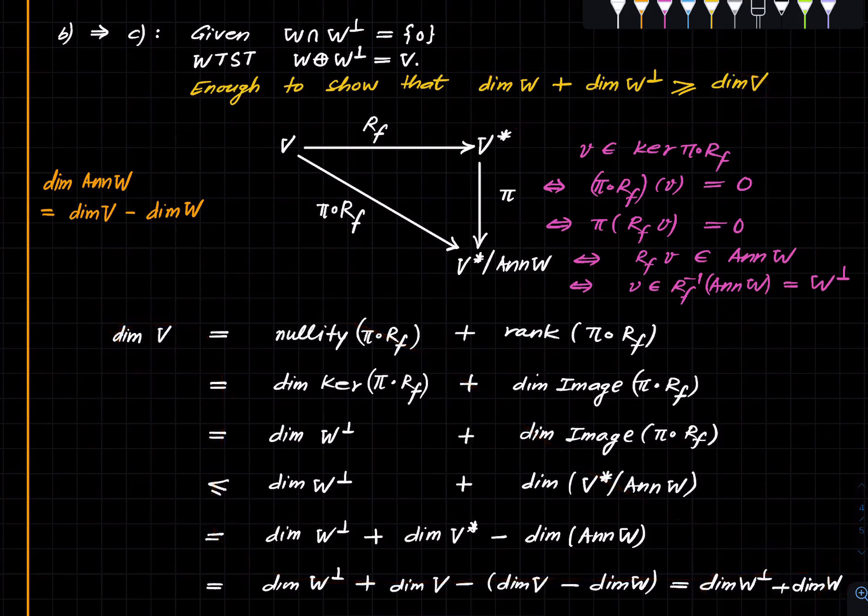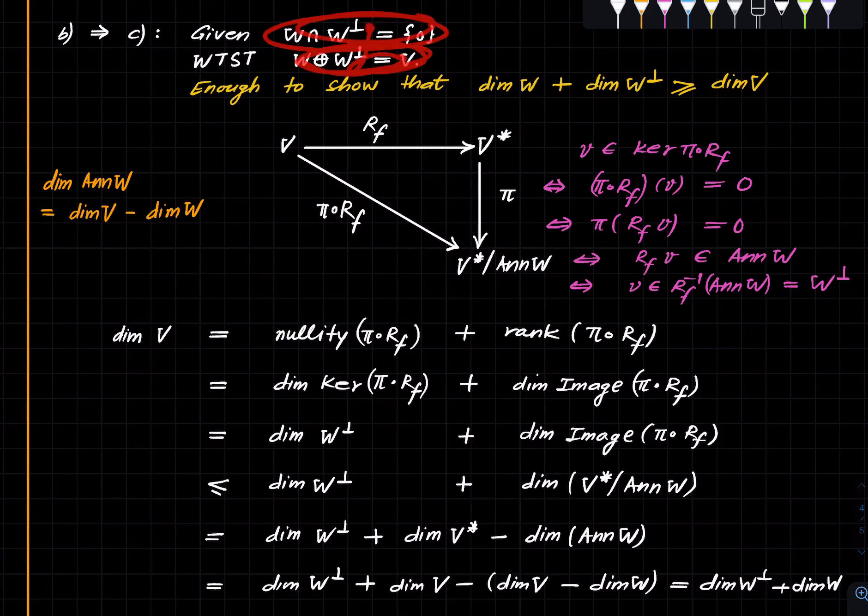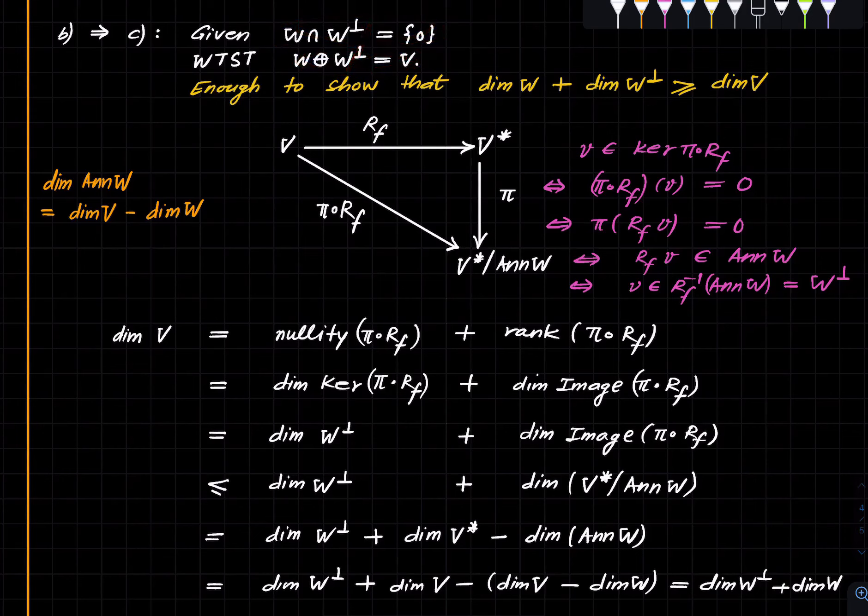C implies B is trivial. C is this and B is that, so C implies B is trivial, and hence we are done. B and C are indeed equivalent. That finishes this lecture.